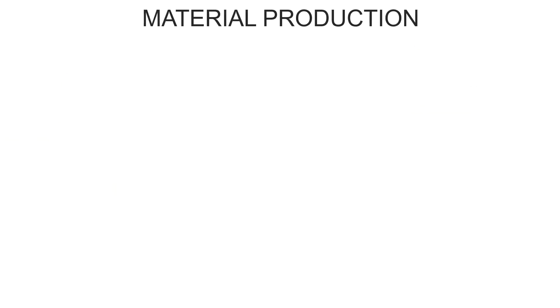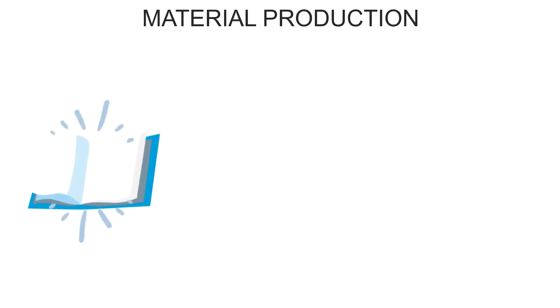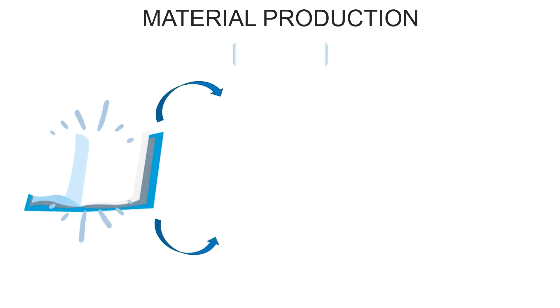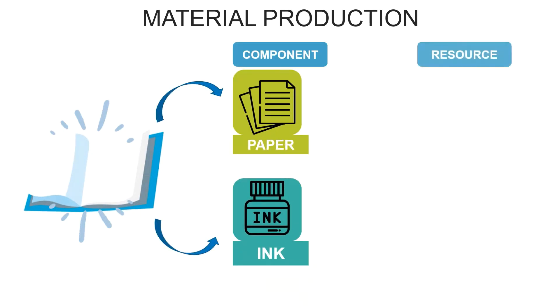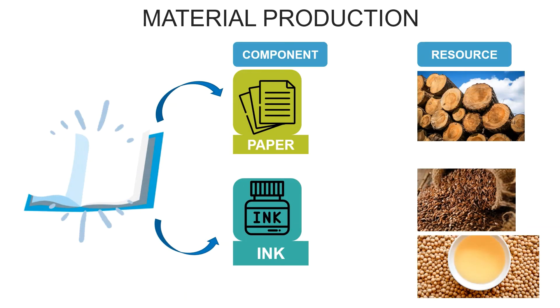Material production: in general, printed books are comprised of paper and ink components. These components are derived from various natural resource stocks such as pulp wood, linseed, and soybean oil.